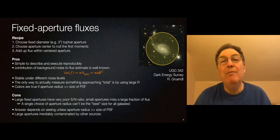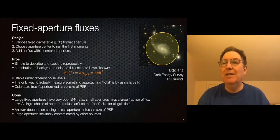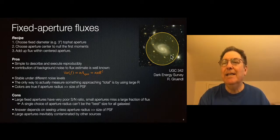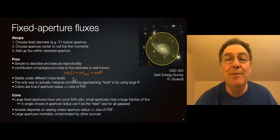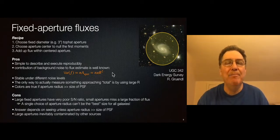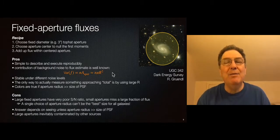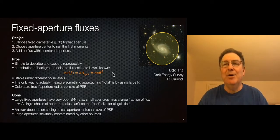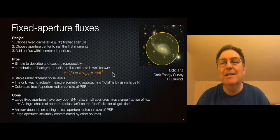Let's start with one that's straightforward and familiar from stars: fixed aperture. Just draw a circle around your galaxy of a chosen radius and add up all pixels inside. This is nice and simple. The uncertainty in this measurement is straightforward — especially in a background noise-limited flux, which is almost always the case for ground-based galaxy photometry. The variance of the flux is just our sky noise variance n times the area of the aperture, which is pi r squared for this top-hat aperture. The mean flux in this aperture will be stable under different noise levels. And if you make the aperture big enough, you can include more and more of the flux of that galaxy, getting a closer approximation to total.